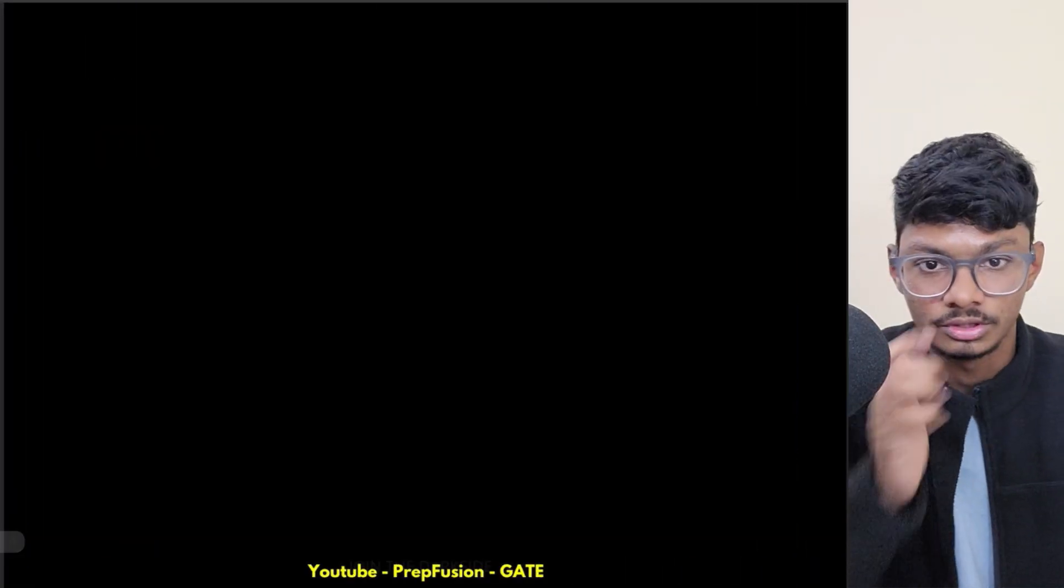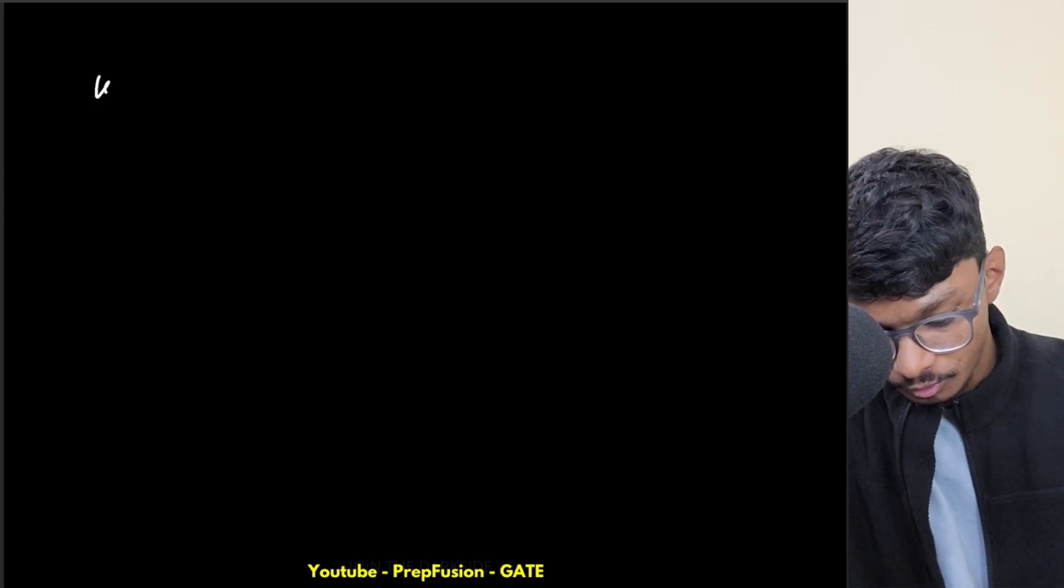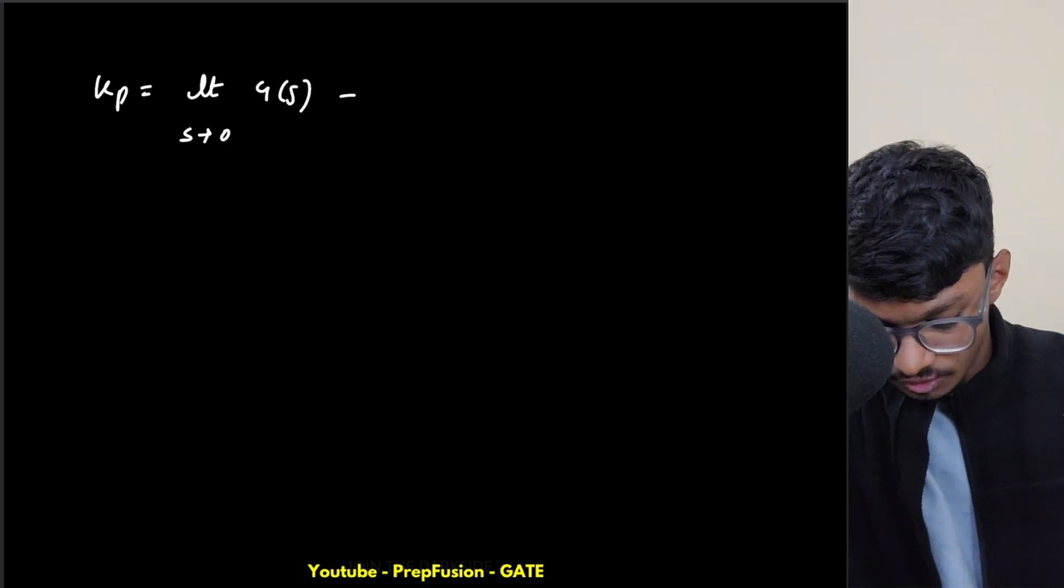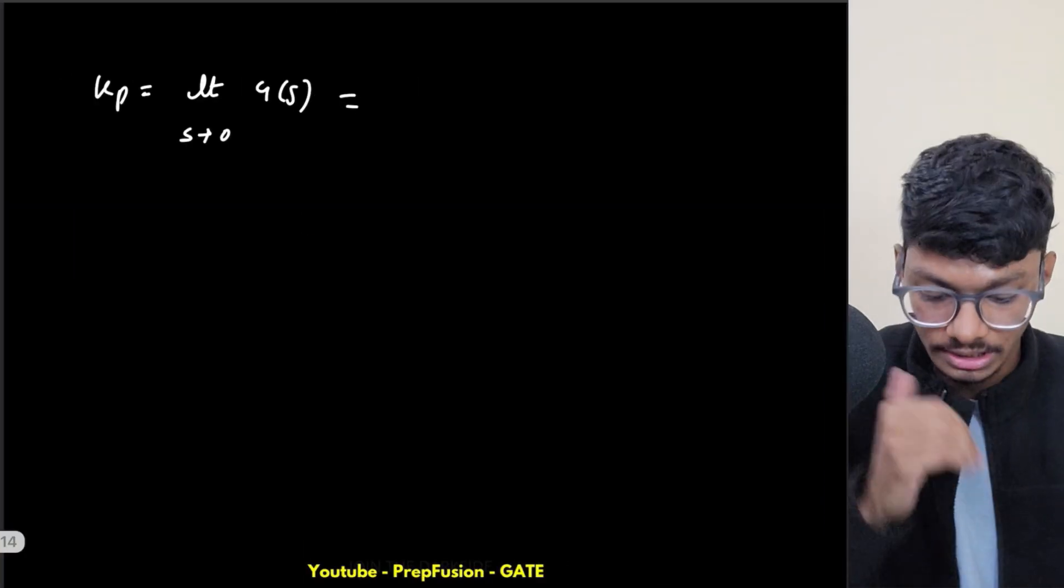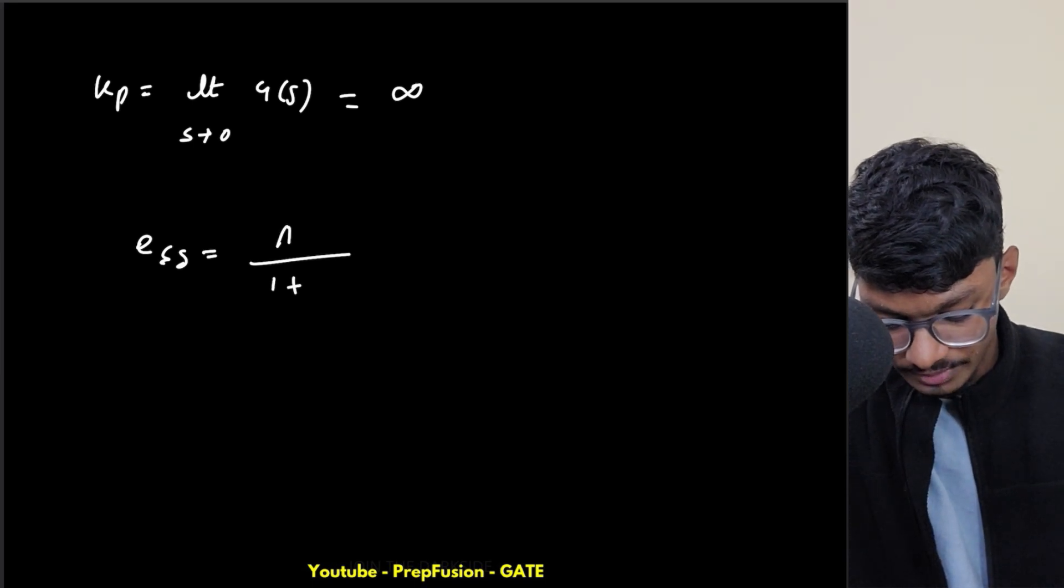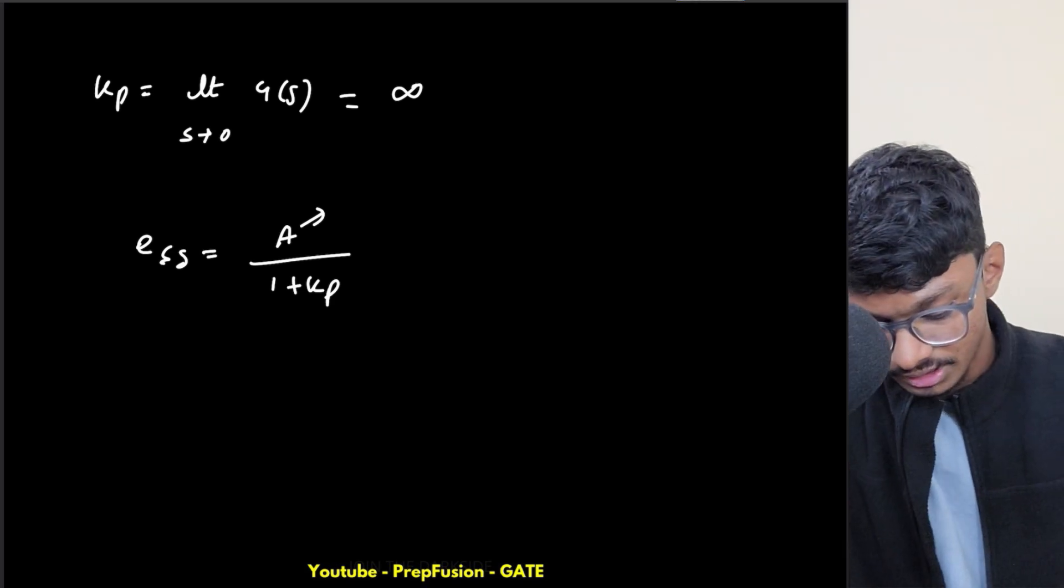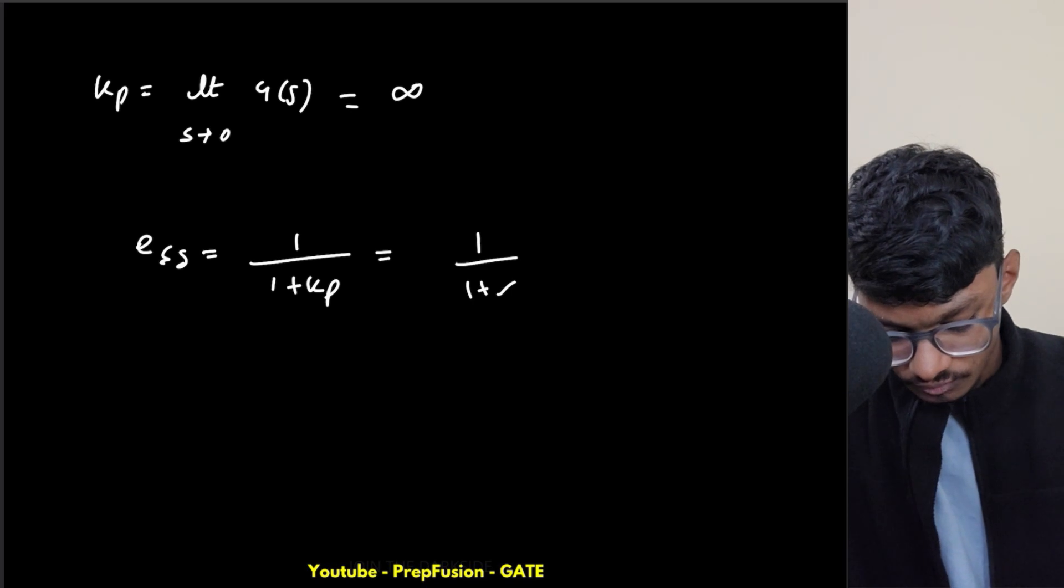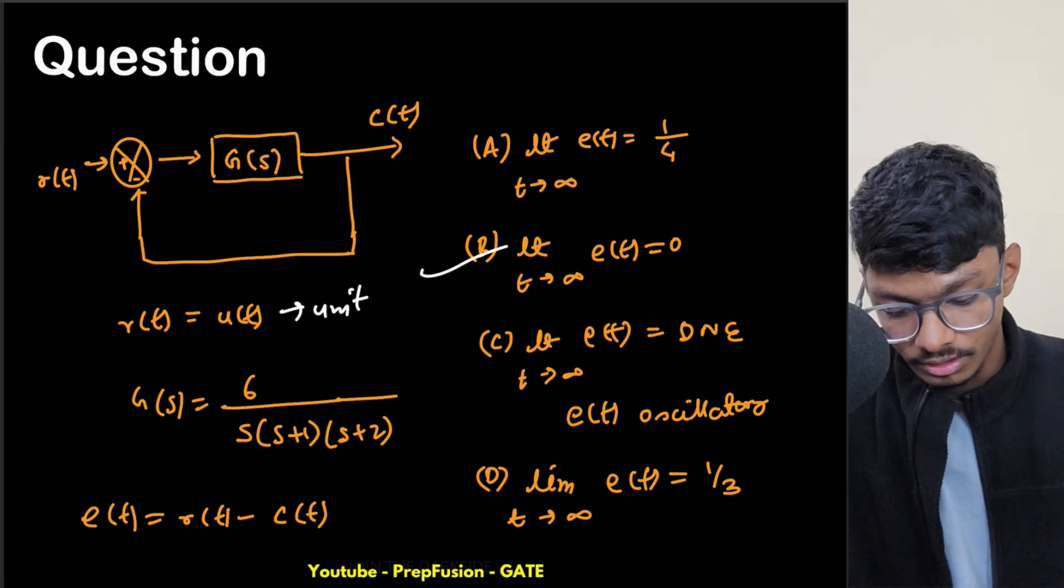So here, you have a unit step input. For unit step input, you would find the position error coefficient. My position error coefficient Kp would be the limit as s tends to 0 of G(s). In this case, as we have a pole at s equals 0, that means it is going to infinity. Your steady state error would be 1/(1 + Kp), where a is the magnitude of the step. In this case a is 1, hence this will be 1 only.